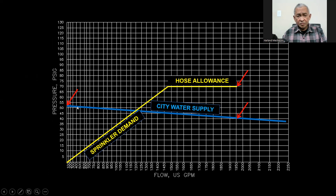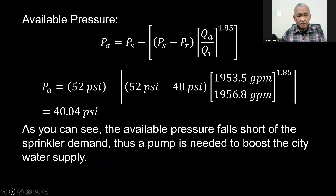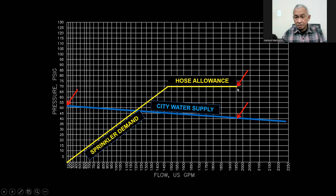As we have already plotted the city water supply, and then we plot the sprinkler demand plus the hose allowance of 500 GPM at a pressure of 69.15 PSI, we see that the city water is not enough for the sprinkler demand and the hose demand. Checking the available pressure at 1,953.5 GPM, using this equation, we get a value of 40.04 PSI. There is a discrepancy — it is not enough. It's a negative safety factor.